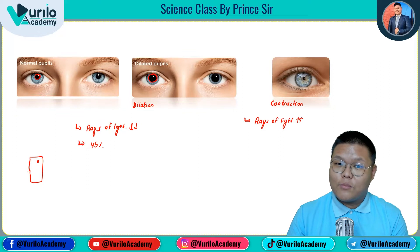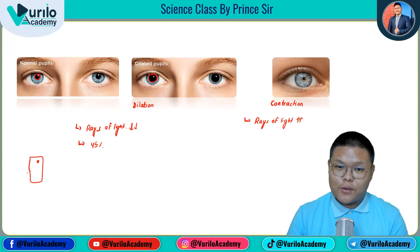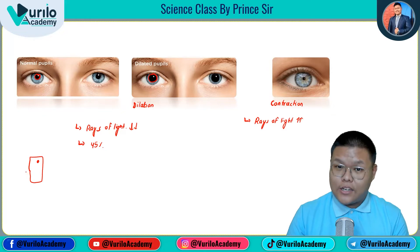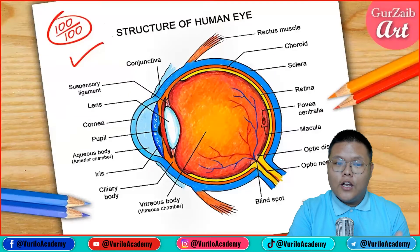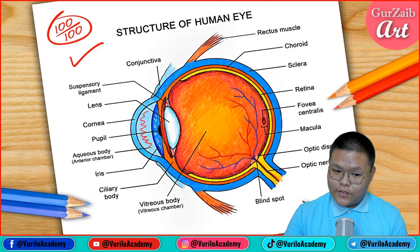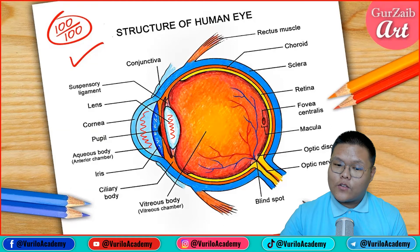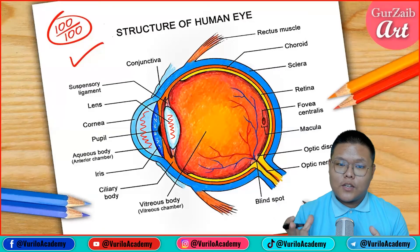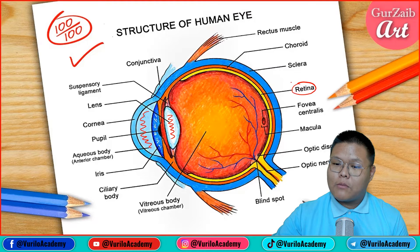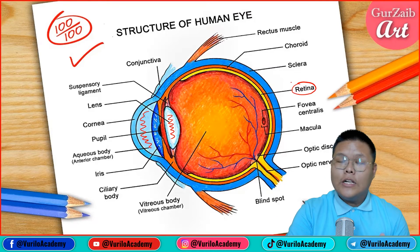In the brain, if there is an injury, the pupil size may dilate or contract — doctors check this to assess brain injury. Generally, for the human eye structure: the cornea is the outer protective layer. Behind the pupil, inside, we have a convex lens. The convex lens contracts or expands with the help of suspensory ligaments and ciliary muscles. On the retina, the image is formed.